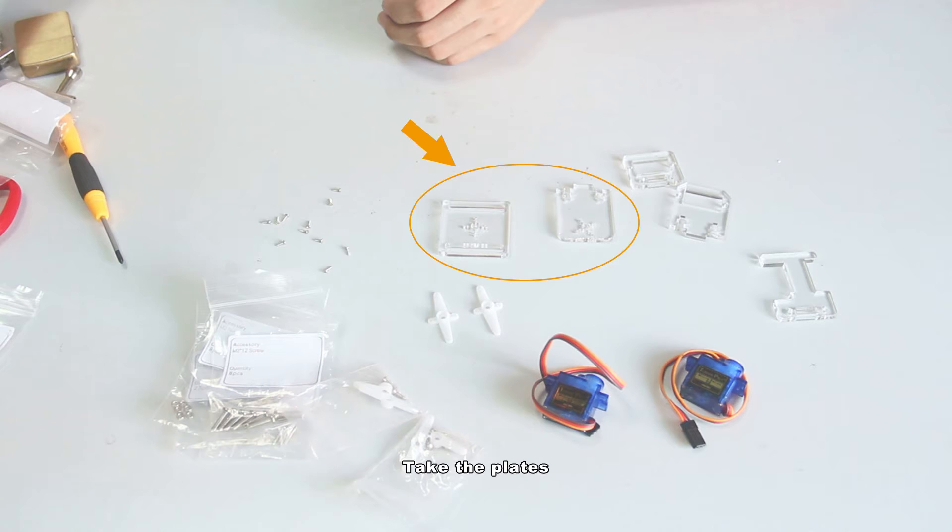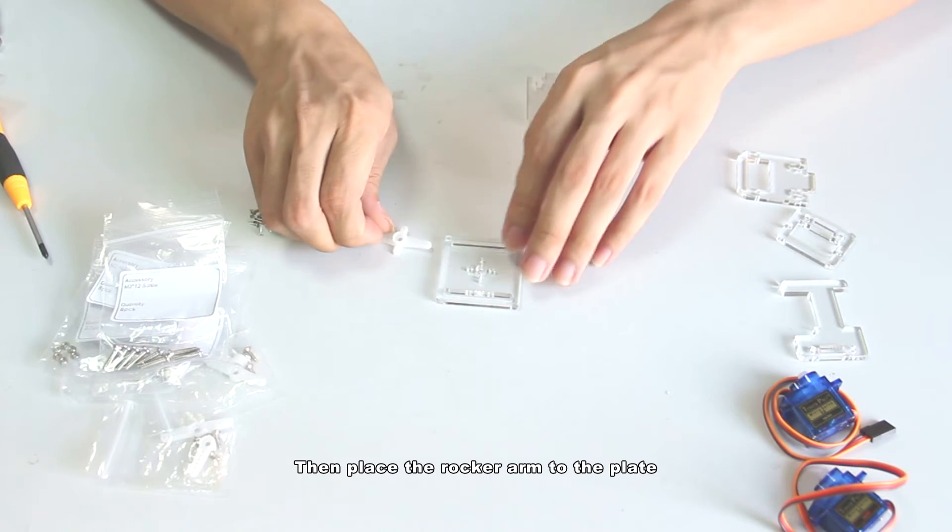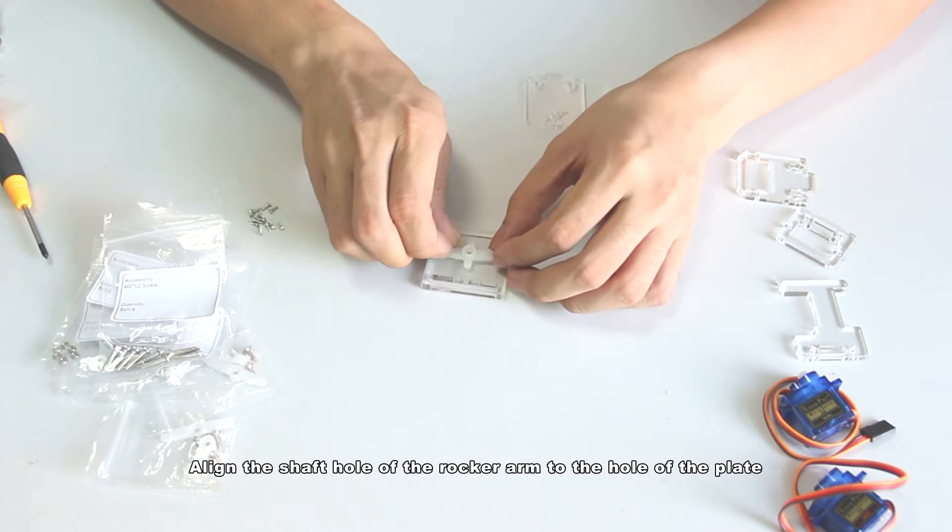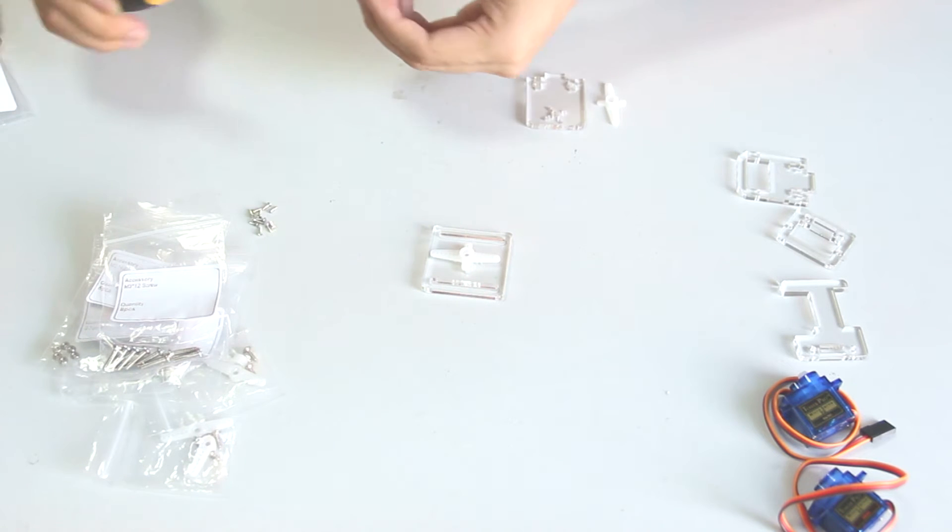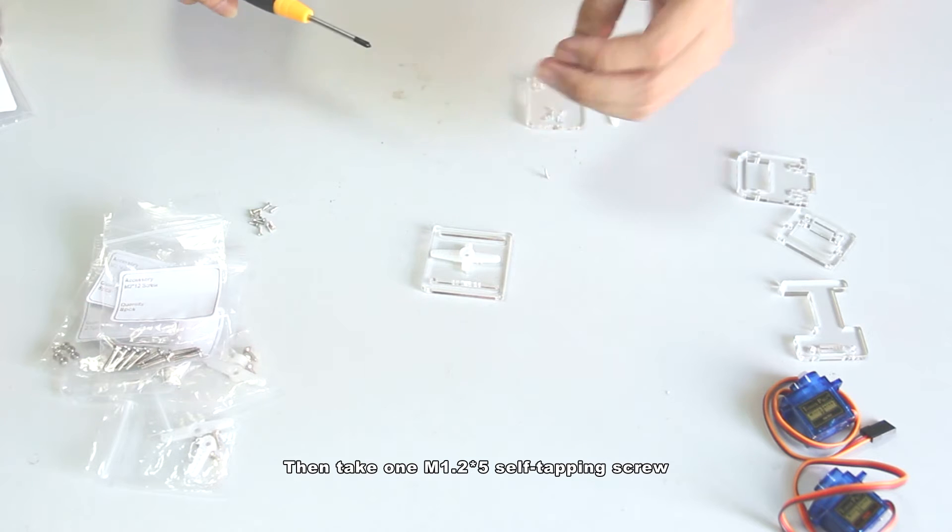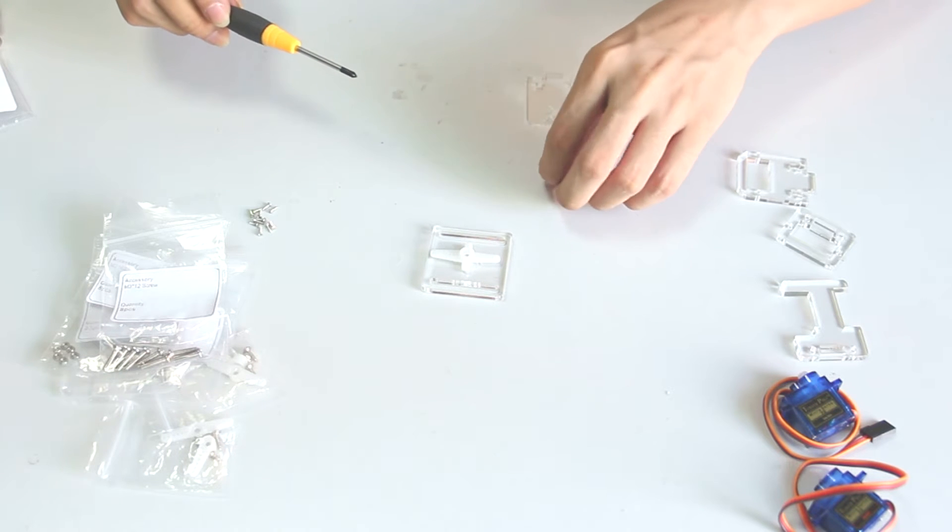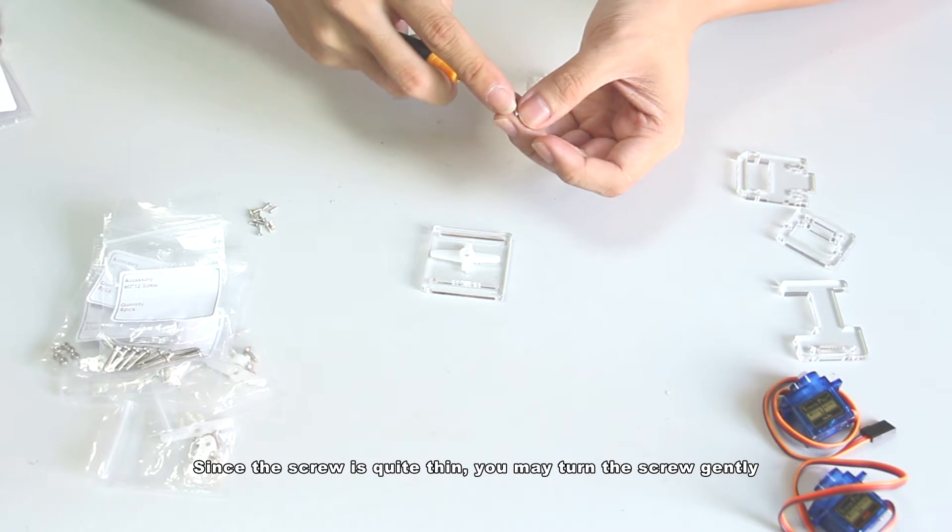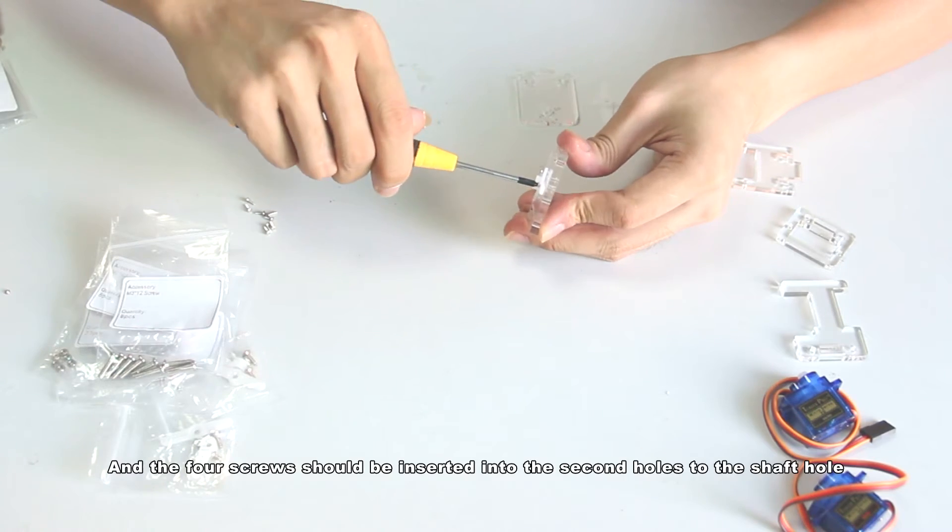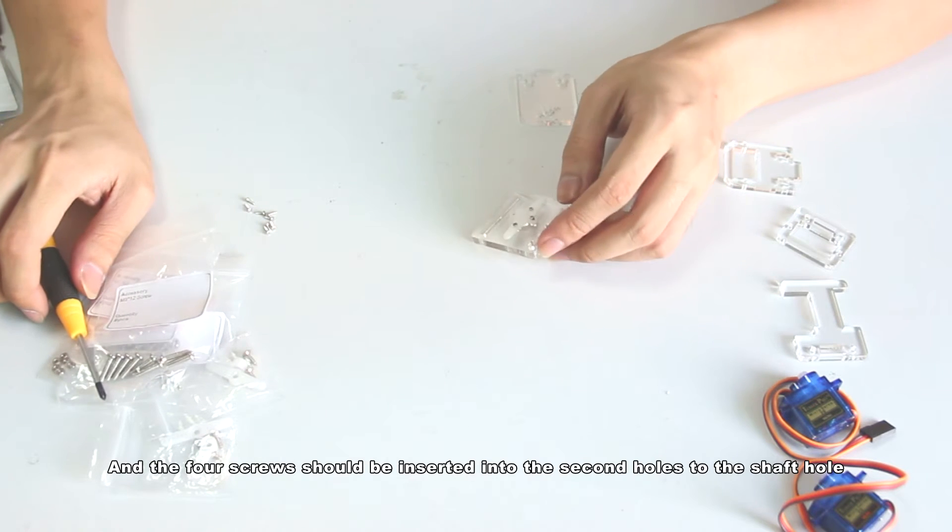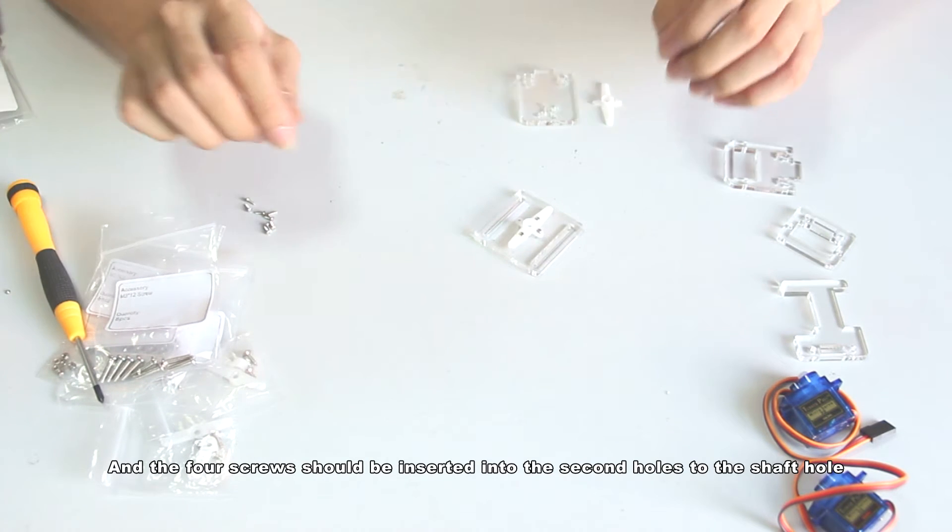Take the plate, then the rocker arm from the servo package. Then take four M1.2x5 screws. Place the rocker arm to the plate. Align the shaft hole of the rocker arm to the hole of the plate. Then take one M1.2x5 self-tapping screw. Since the screw is quite thin, you may turn the screw gently. The four screws should be inserted into the thickened holes to the shaft hole.